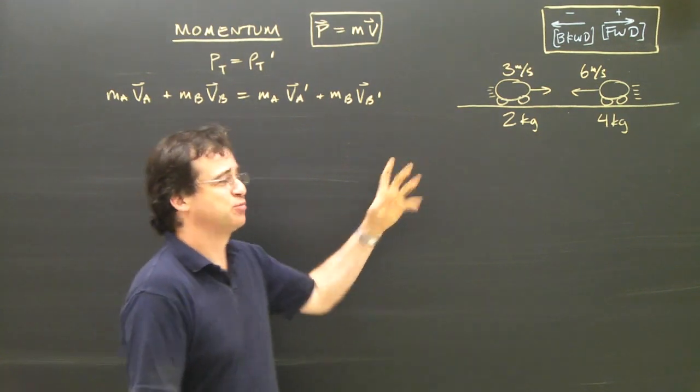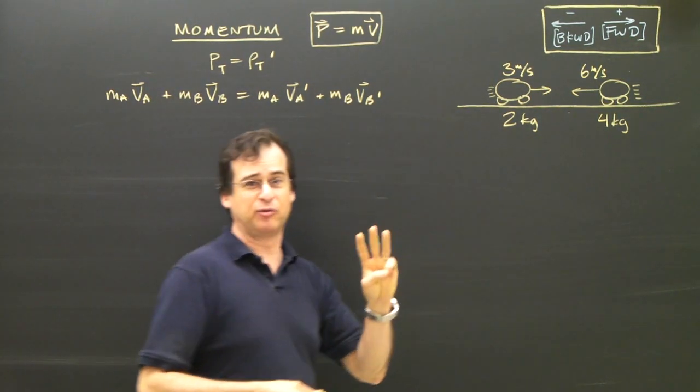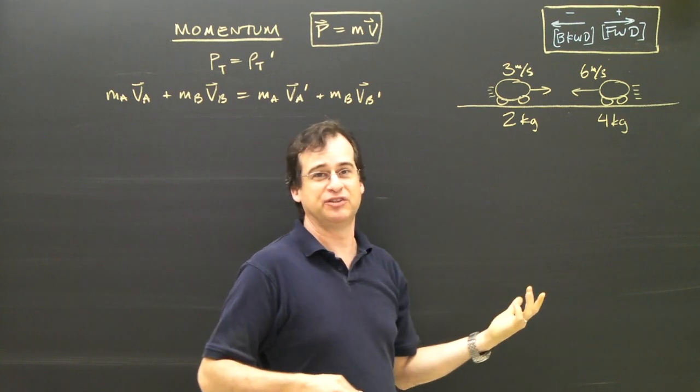Let's do the second type of question. The first one, the objects join together. I said there are three possibilities. The second possibility is they bounce off each other.